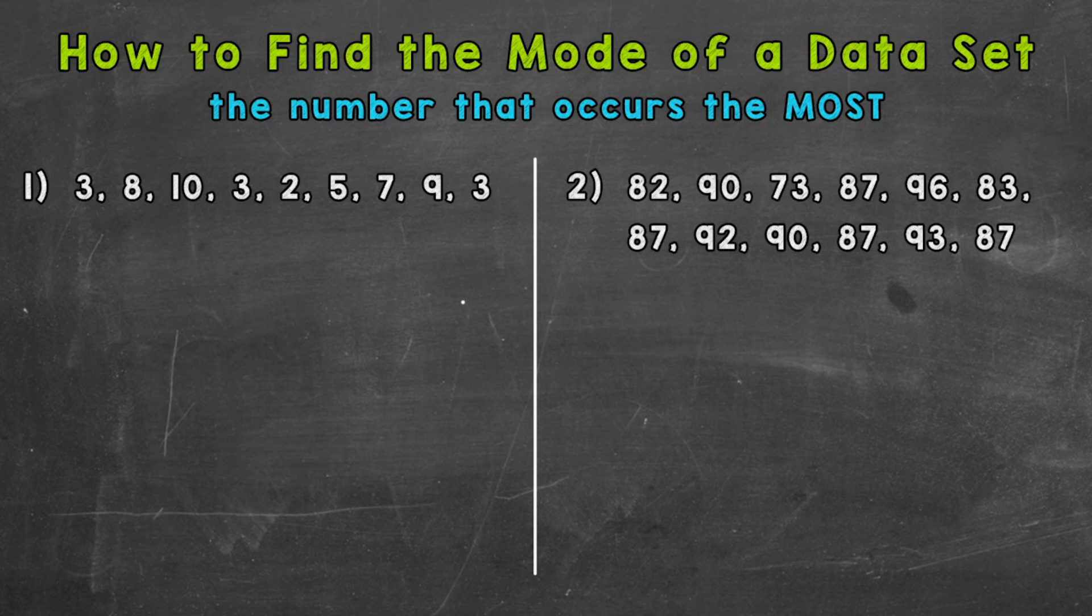We're going to go through two examples here to help you get this down. Let's jump into number one. The first thing we need to do is take our data set and put it in order from least to greatest. Our smallest number is this two here, so I cross it off so I know I counted it and don't skip anything or count anything twice. After that we have three threes, then a five, a seven, an eight.